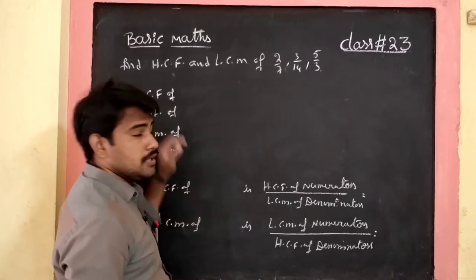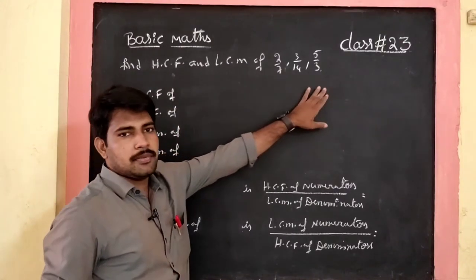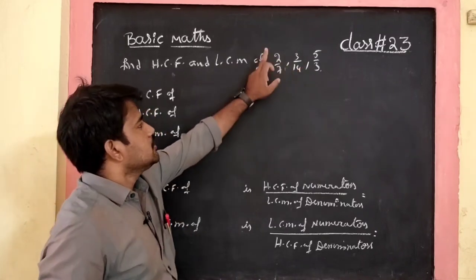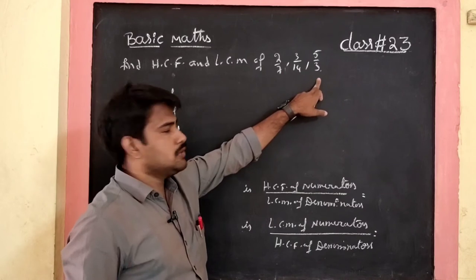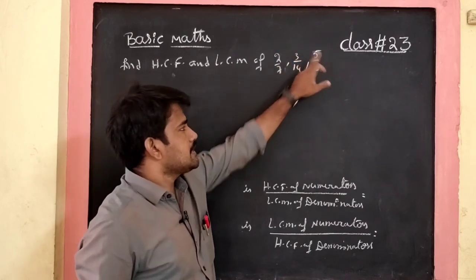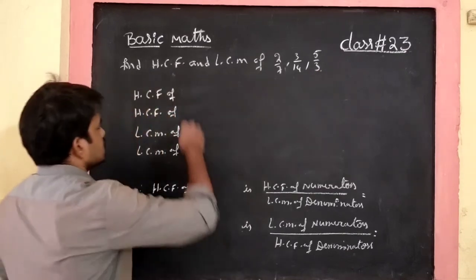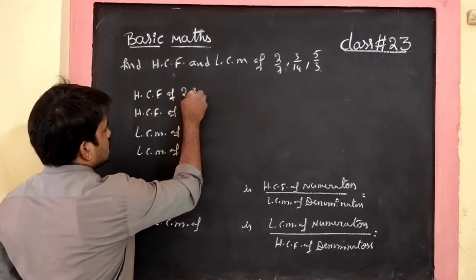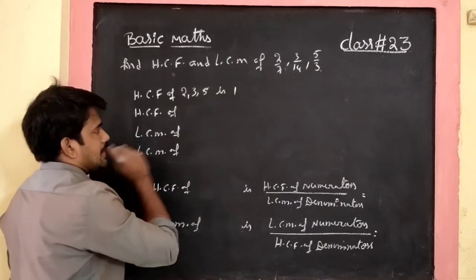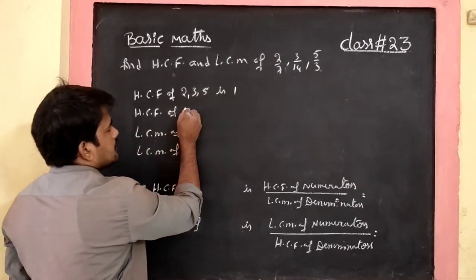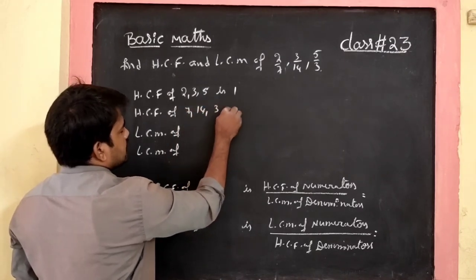Next example: find HCF and LCM of 2/7, 3/14, and 5/3. For HCF of fractions, we use HCF of numerators 2, 3, 5 by LCM of denominators 7, 14, 3. HCF of numerators 2, 3, 5 is 1. HCF of denominators 7, 14, 3 is also 1.